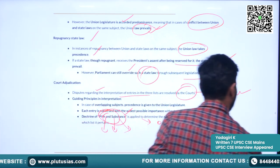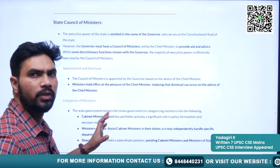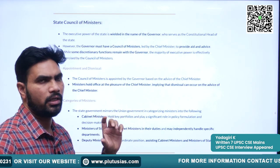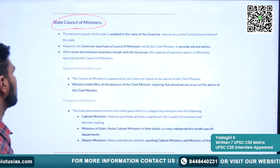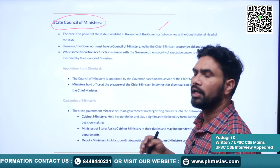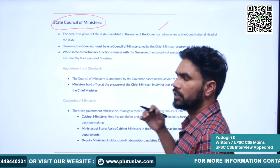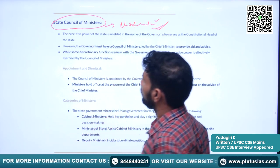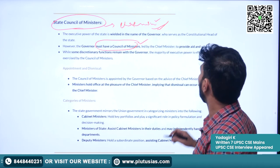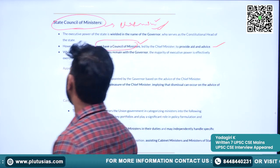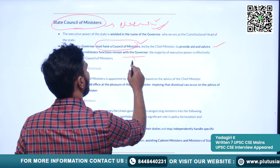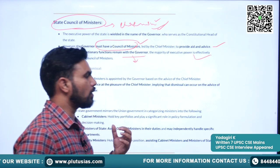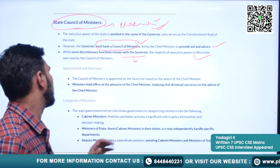Now we will understand some aspects about the state council of ministers. Though the executive power is wielded in the name of the governor, the real power exists in the council of ministers, which is headed by the chief minister. The governor must have a council of ministers to aid and advise in day-to-day administration. However, some discretionary functions remain with the governor, while the majority of executive power is effectively exercised by the council of ministers.